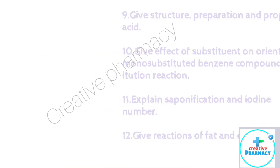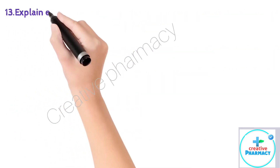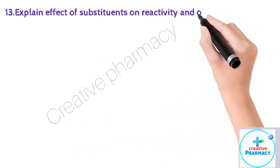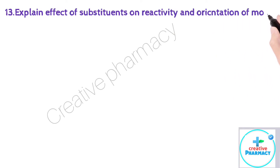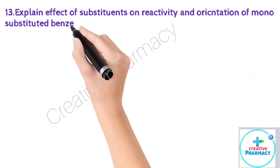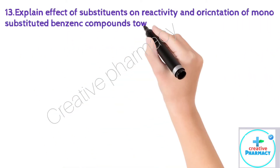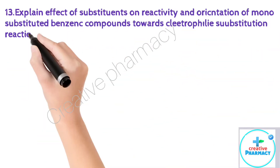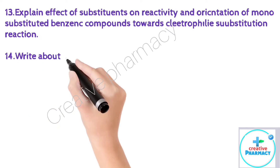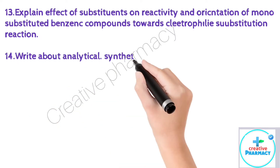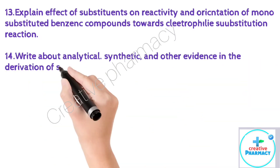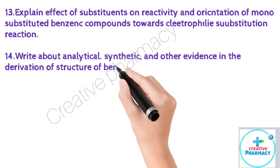Question 13: Explain the effect of substituents on reactivity and orientation of monosubstituted benzene compounds towards electrophilic substitution reaction. Question 14: Write about analytical, synthetic, and other evidence in the derivation of structure of benzene.